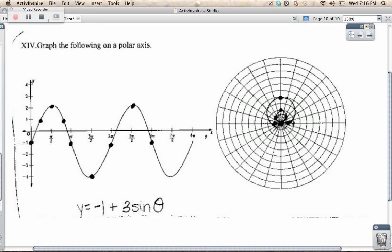So half of that is 3. You start here, you notice that this is the shape of a sine function. So therefore, I know that the equation is negative 1 plus 3 sine theta.